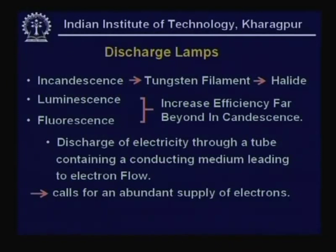We defined light efficacy as lumens per watt of electrical energy output, since most lamps are powered by electrical energy. Tungsten filament and halide lamps fall under incandescence. The next phenomenon employed is luminescence or electroluminescence — radiation obtained by creating a discharge in a gas or vapor by application of an electric field, unlike incandescence where filament material is heated. This allows operation at relatively lower temperatures, which is one reason discharge lamps are more efficient.